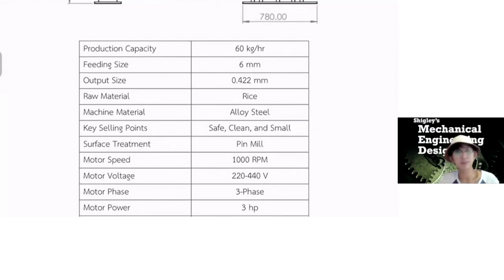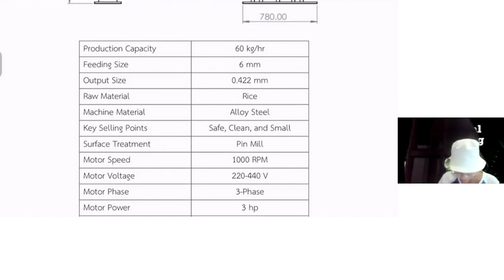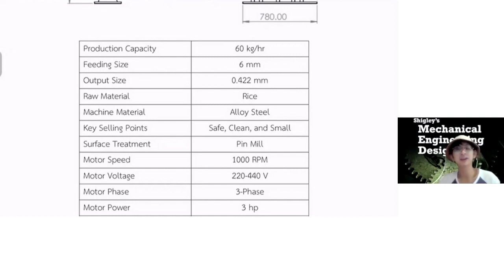The feeding size is 6 mm. The output size is 0.4 mm with the powder side. The raw material is the rice. The machine material is an alloy steel for safe, clean, and small key selling point. We use the surface treatment for the rice is a pin mill. We got a motor speed about 1000 rpm and 3 phase and 3 horsepower.